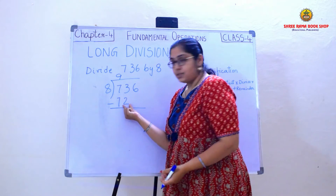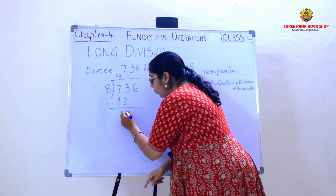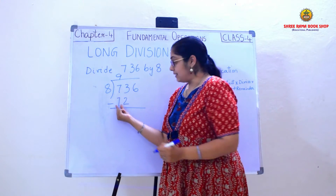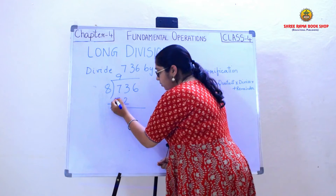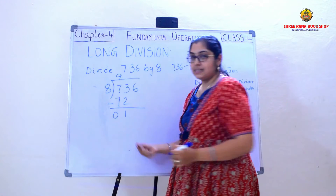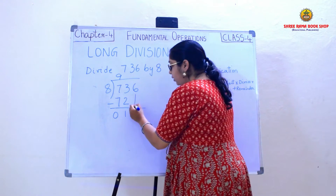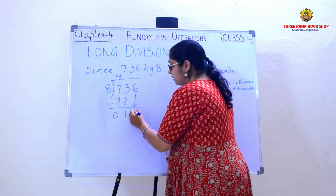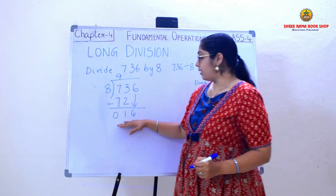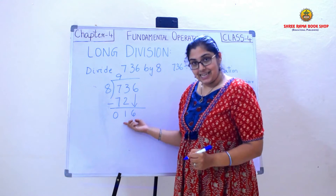Now 3 minus 2 is 1, and 7 minus 7 is 0. Now I need to bring down this number, and the new number I have is 16.